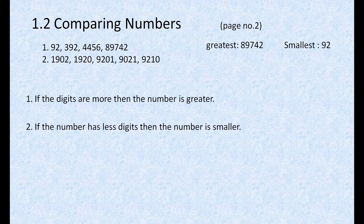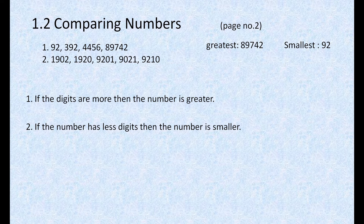Let's go to the next example. The next example has these numbers: 1902, 1920, 920, 9201, 9021, and 9210. Here, we can't use those two rules, because all the numbers have the same number of digits — all numbers have only four digits. No more and no less.